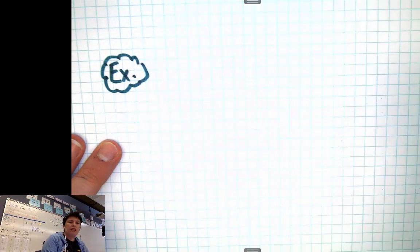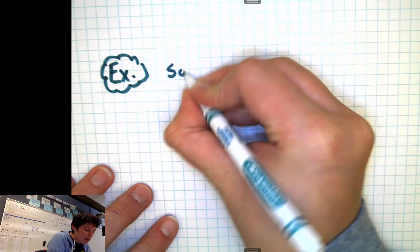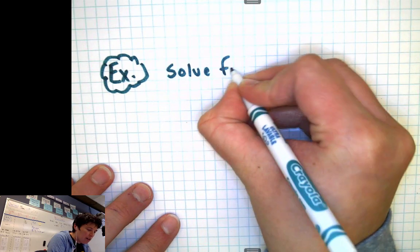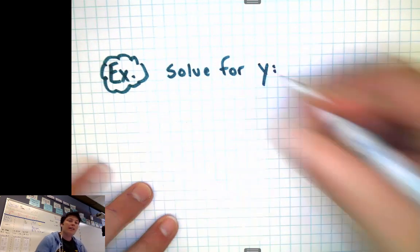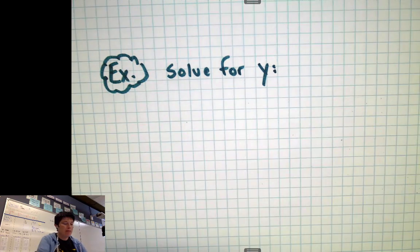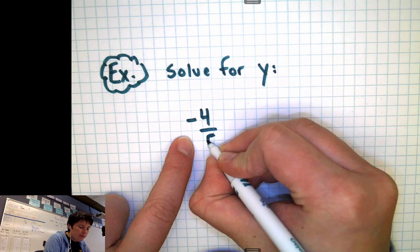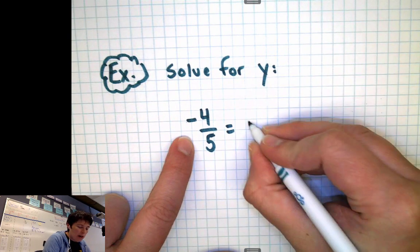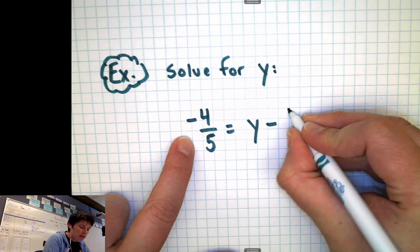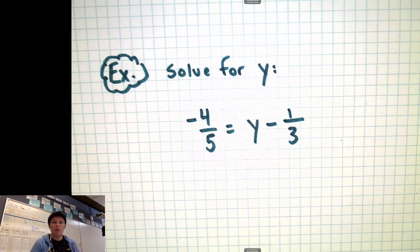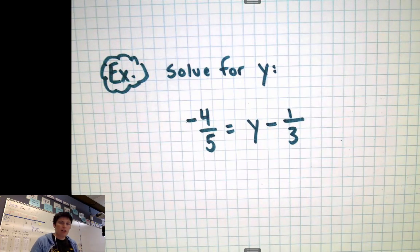Okay, this time, we're going to solve for y. And here's the problem that we're going to do this time. This time we have negative 4/5ths equals y minus 1/3rd. Solve for y.